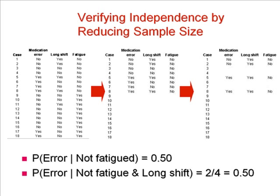The question is whether the rate of medication errors is independent of length of the work shift. Using the data in the table, the probability of medication error is calculated as 33%. Probability of having a long shift is calculated as 28%. Probability of having both error and long shift is 11%, and this is not equal to the product of the probability of each event. Therefore, error and long shift are dependent on each other.